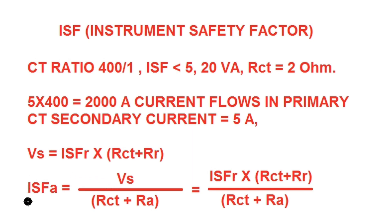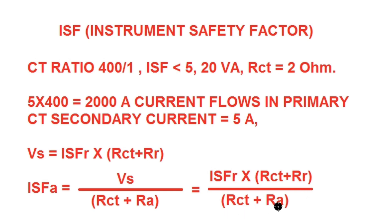We can calculate the actual ISF for the metering class CT, which equals Es (saturation voltage) divided by (RCT + RA), where RA is the actual burden connected on the CT secondary side. So actual ISF = ISF_R × (RCT + RR) / (RCT + RA). From this formula, we can conclude that if RA is less than RR, the actual ISF will be higher than the rated ISF, which is not good for the instrument connected on the CT secondary side.